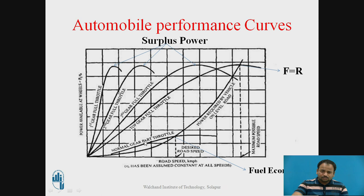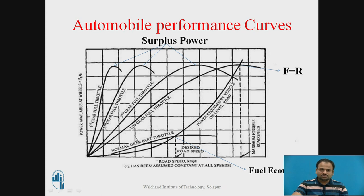Here you can see the normal throttle condition. If you are using the vehicle at normal throttle condition, this is the particular point where you will get the economic speed — where you will get fuel economy. On the speedometer of our vehicle, the fuel economy gauge is shown. Whatever fuel economy range is given, if you are travelling within that range, you will definitely get more fuel economy. This is the performance curve of a vehicle and the same performance curve is plotted for every vehicle. The nature of the performance curve is the same for all vehicles. If the nature differs, then definitely the performance of the automobile is not good.